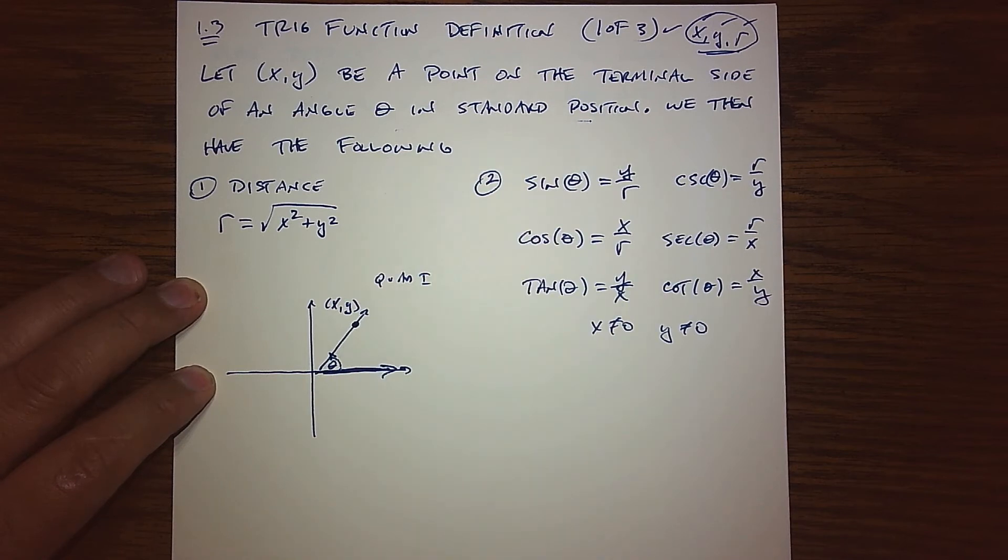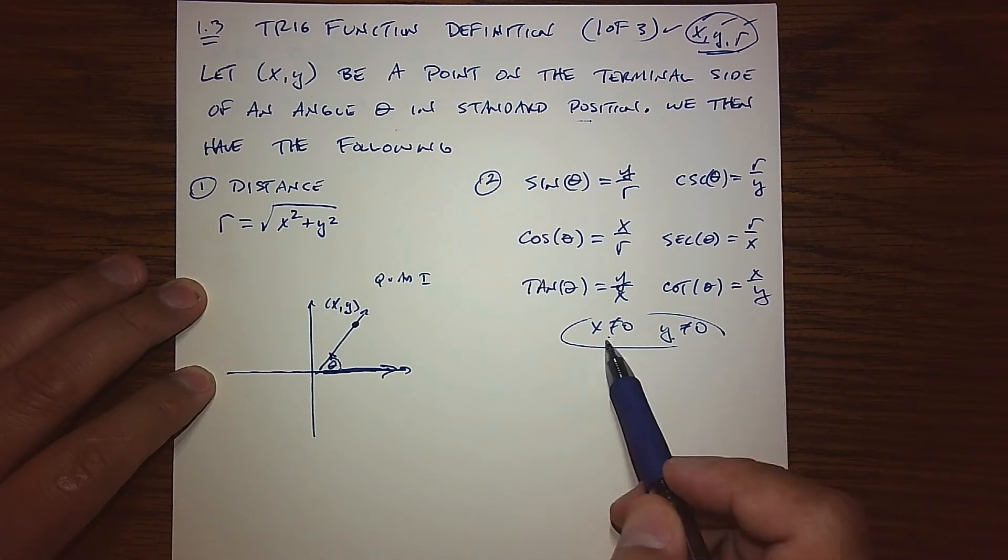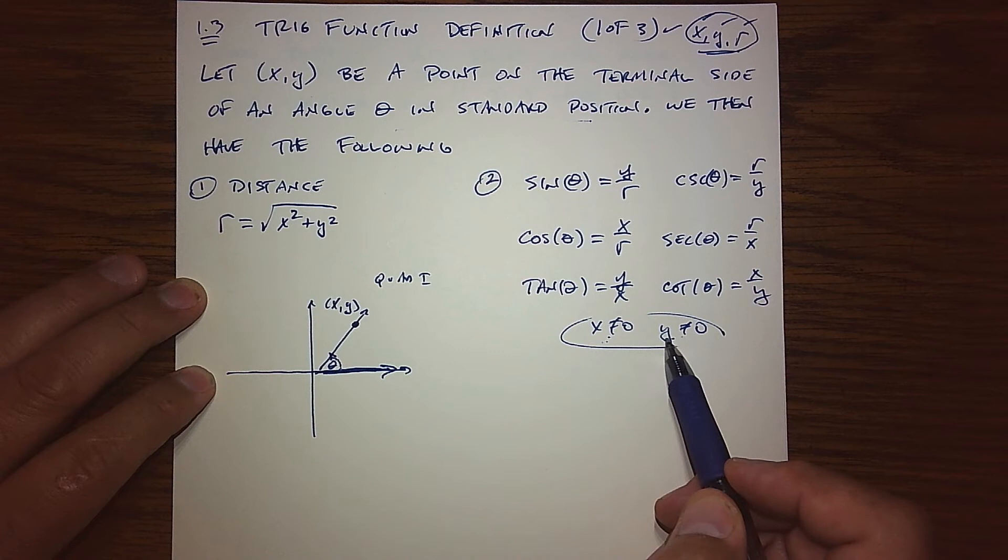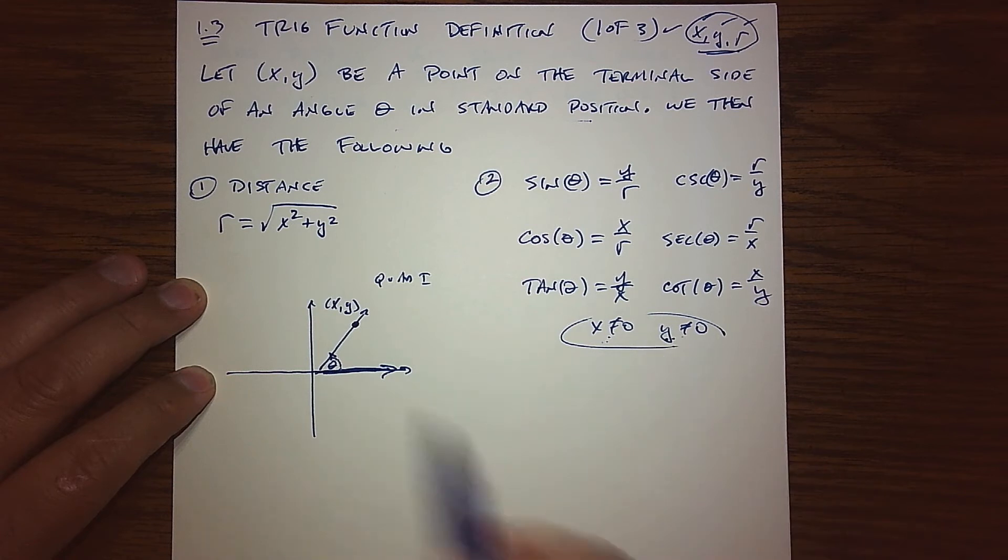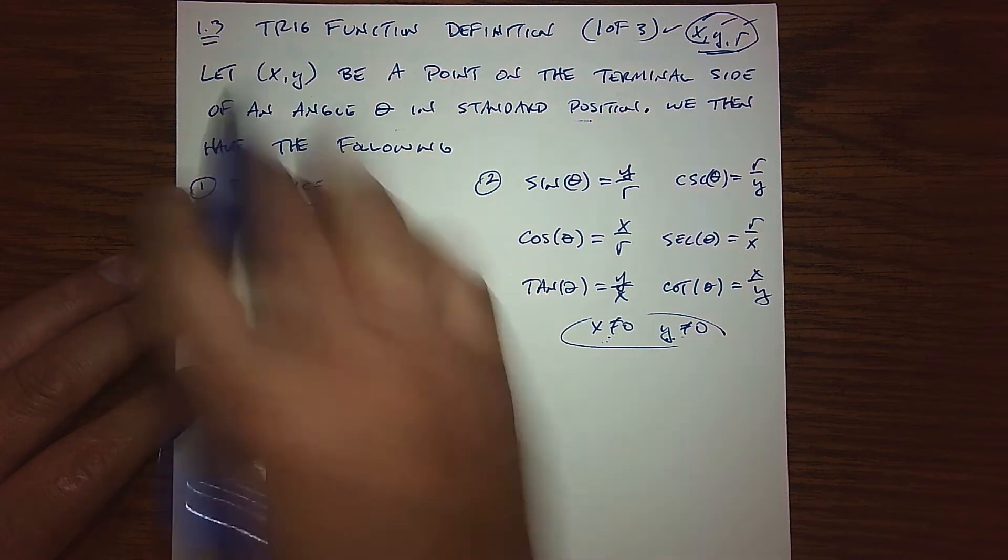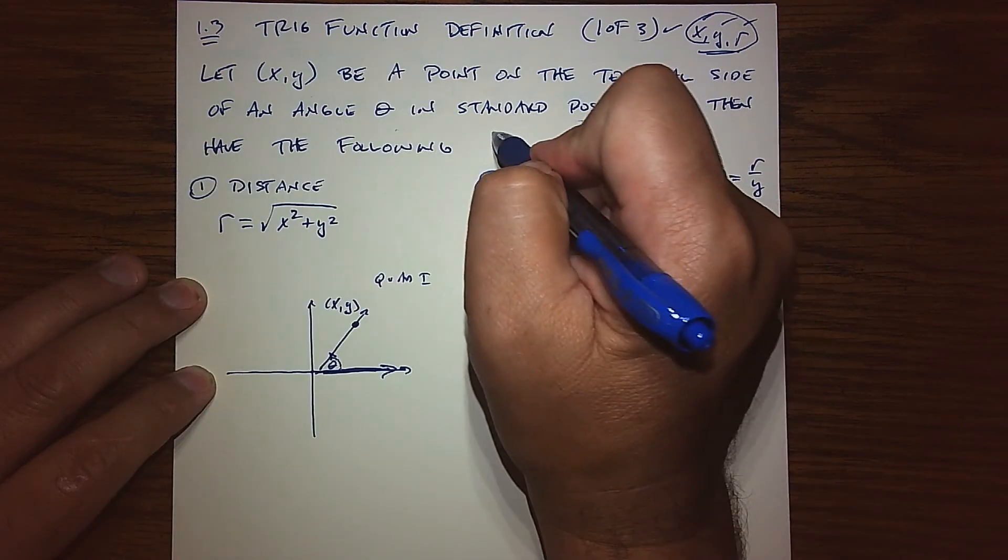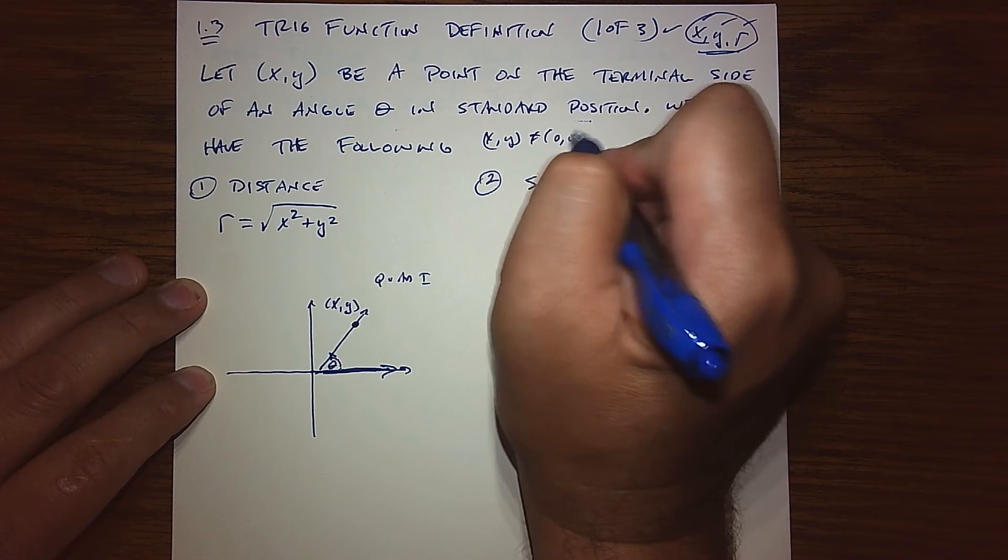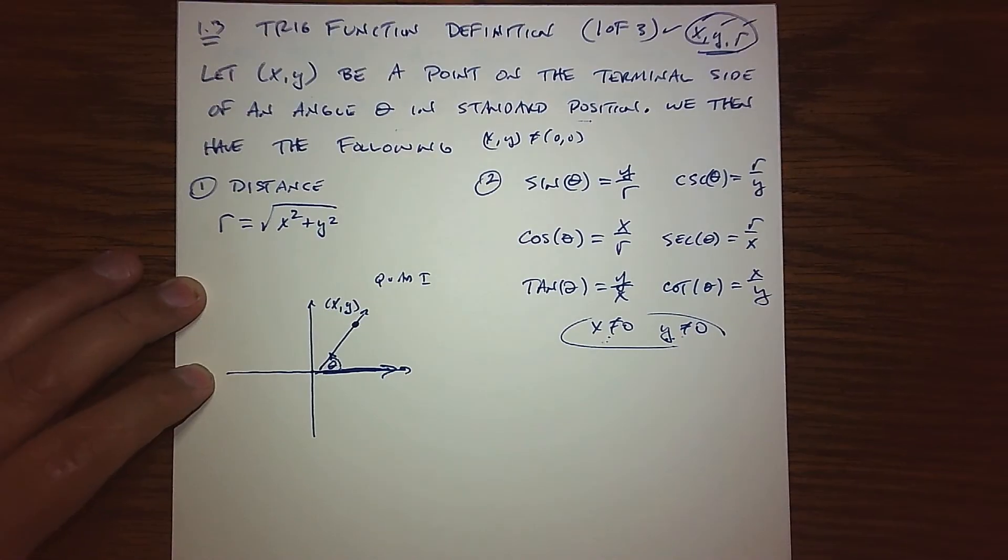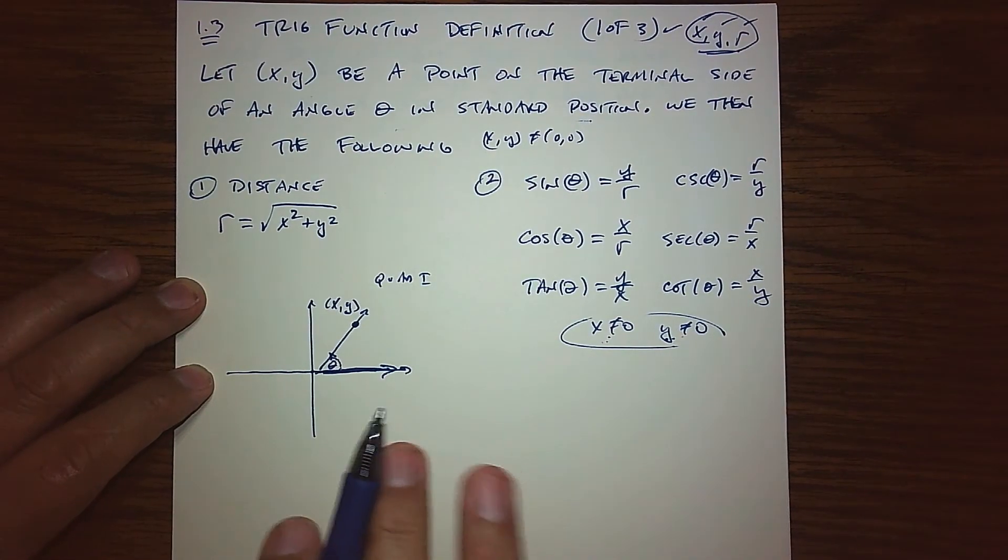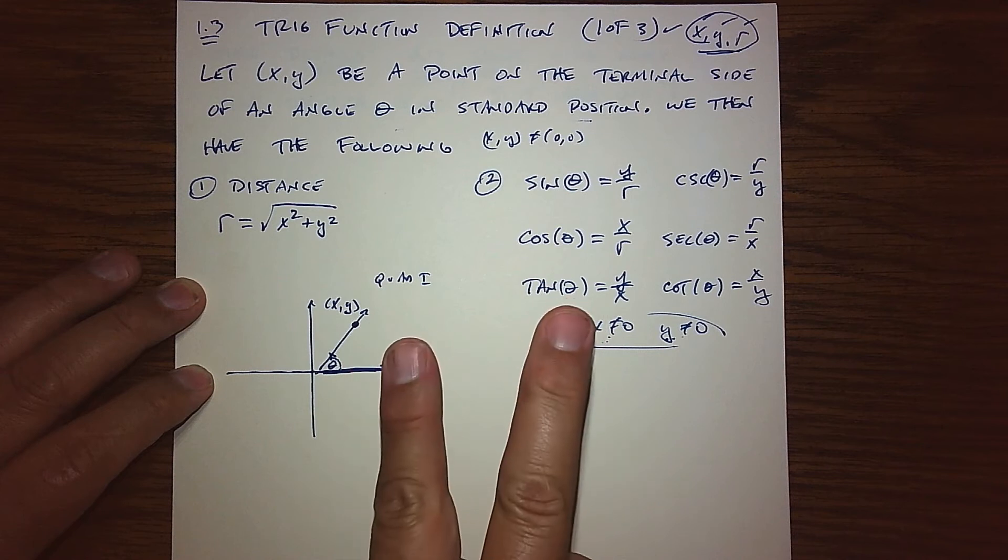One thing I'll say before I move any further is that we are not talking about the origin. So X and Y cannot both be zero. One or the other could be zero, but they both can't be zero. So we're excluding the origin from this definition. So X comma Y cannot be zero, zero. Okay? So with all that said, with that information, there's actually two things that are formed.